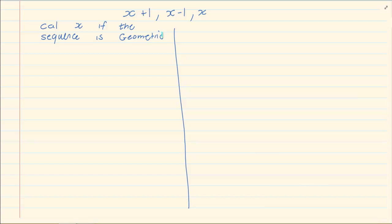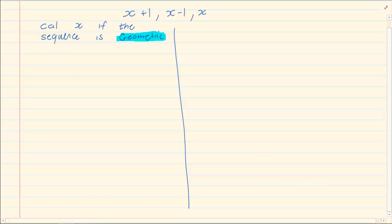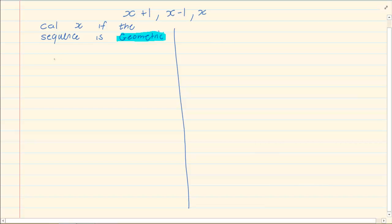You must read the question carefully — they are telling you that it is geometric. So you know, as soon as you're doing geometric, the first rule is the test: term 2 over term 1 is equal to term 3 over term 2. So we have (x minus 1) over (x plus 1) is equal to x over (x minus 1).